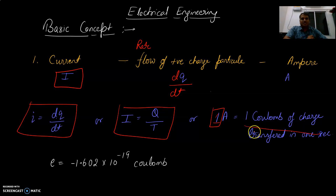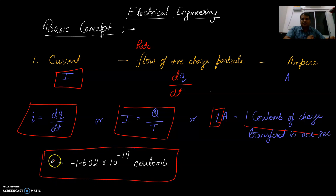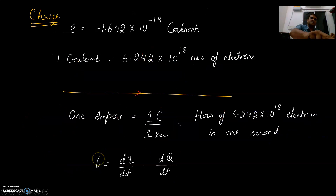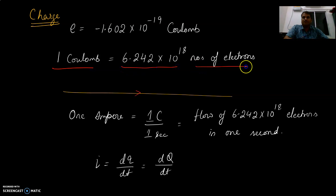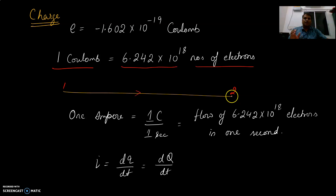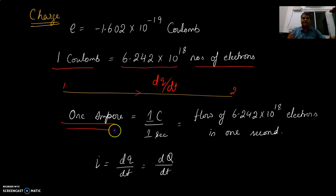1 coulomb of charge transferred in 1 second. The charge of 1 electron is equal to minus 1.602 × 10⁻¹⁹ coulombs. So 1 coulomb is equal to 6.242 × 10¹⁸ electrons. If this number of electrons passes from one point to another point, the rate at which they pass through — dQ/dt — is the current. If this happens in one second, that is called 1 ampere.